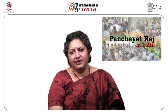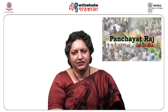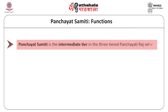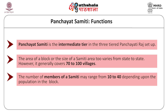Now let us discuss the intermediate tier of the Panchayati Raj institutions — the Panchayat Samiti, the tier at the block level. Panchayat Samiti is basically made for around 70 to 100 villages in a particular state, though the number of villages may vary from state to state. The number of members in the Panchayat Samiti varies from 10 to 40, depending on the population of a particular area.